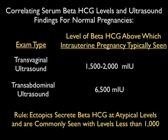Another important concept is the correlation of serum beta-HCG to the findings of a normal pregnancy. For transvaginal sonography, the discriminatory zone at which we will see findings of an intrauterine pregnancy is about 1,500 to 2,000 milli-international units. For transabdominal sonography, the discriminatory zone is about 6,500 milli-international units. This rule does not apply to ectopic pregnancies, which secrete beta-HCG at atypical levels — commonly seen with betas ranging from lower than 1,000 to as high as 30,000.